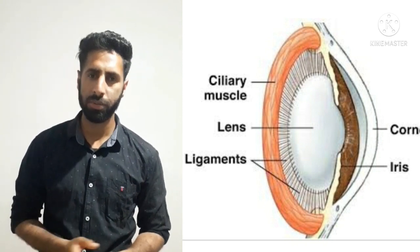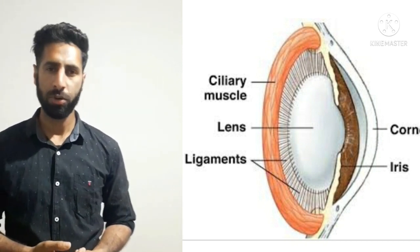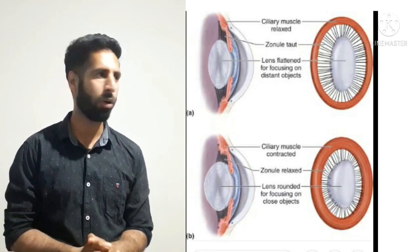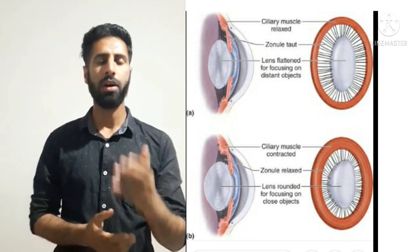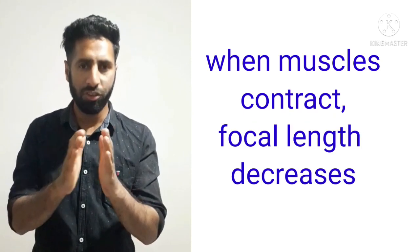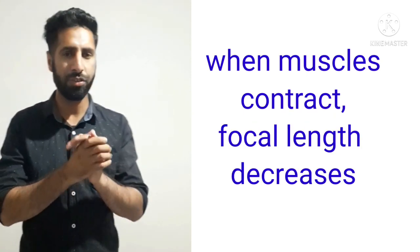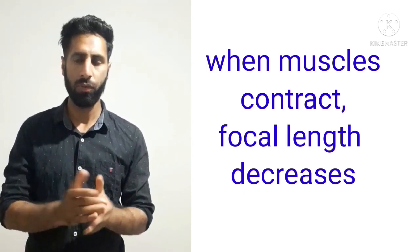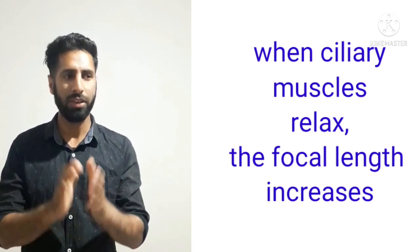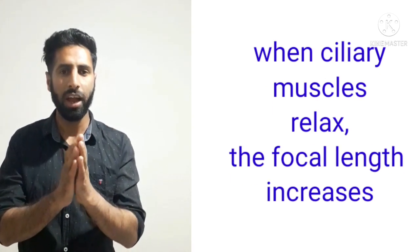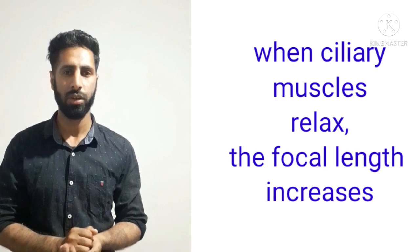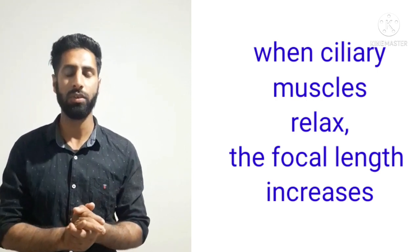The next part is the ciliary muscles. Ciliary muscles are responsible for varying the focal length by the process of contraction and relaxation. When the ciliary muscles contract, the lens becomes thick and its focal length decreases. When the ciliary muscles relax, the lens becomes thin and its focal length increases. In this way, the focal length of the eye lens is varied by the contraction and relaxation of the ciliary muscles.